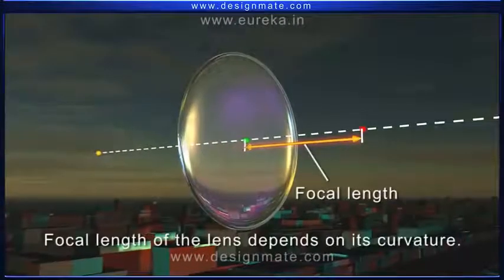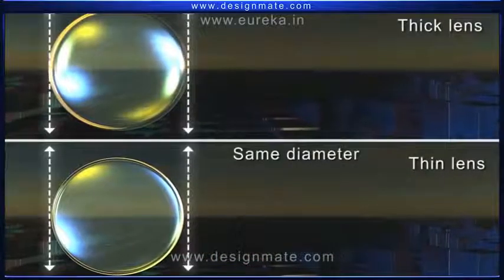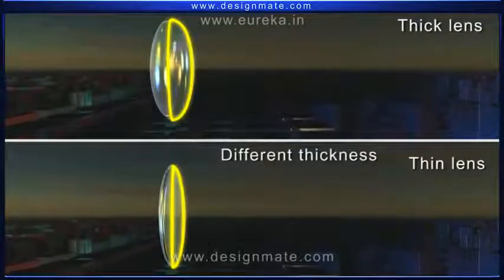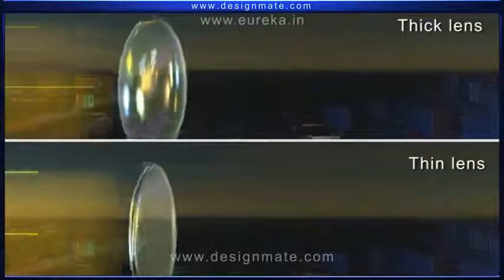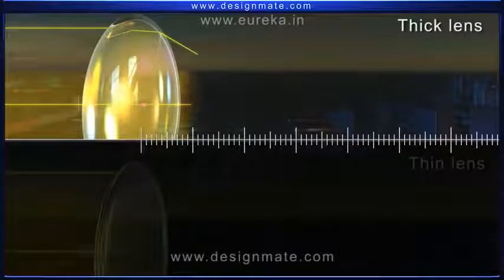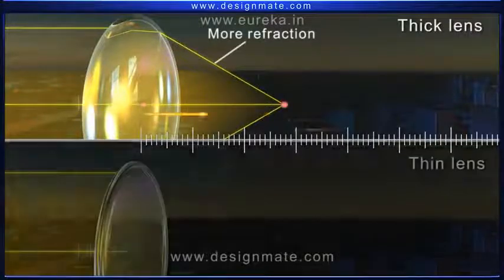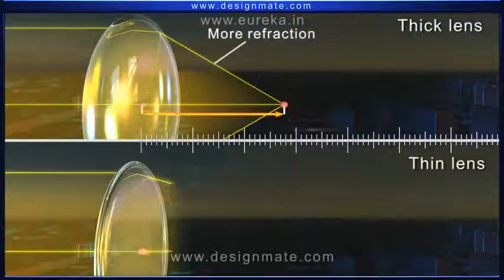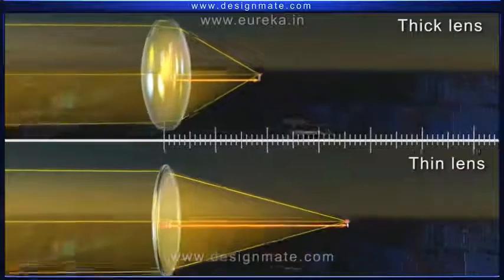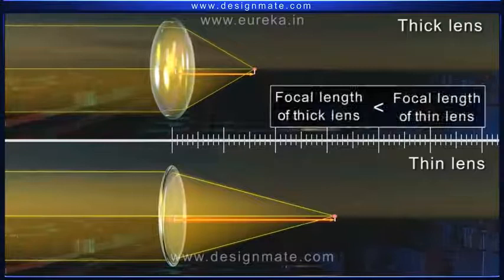The focal length of the lens depends on its curvature. Take two lenses of the same diameter but of different thickness and hence curvature. When parallel light rays are incident on them, you can observe that the light rays passing through the thick lens undergo more refraction and get converged at a shorter distance, as compared to the thin lens, which causes less refraction. So we can observe that the thick lens has a shorter focal length than the thin lens.